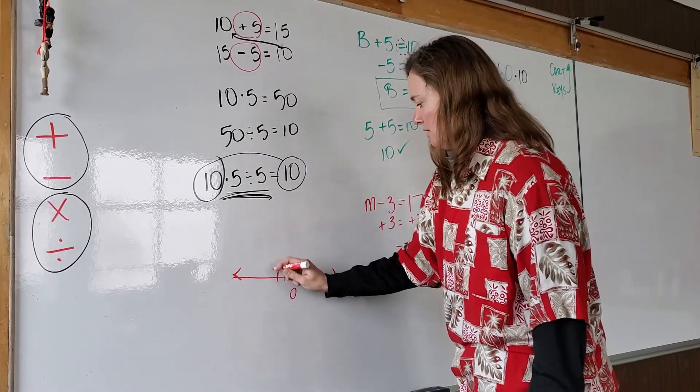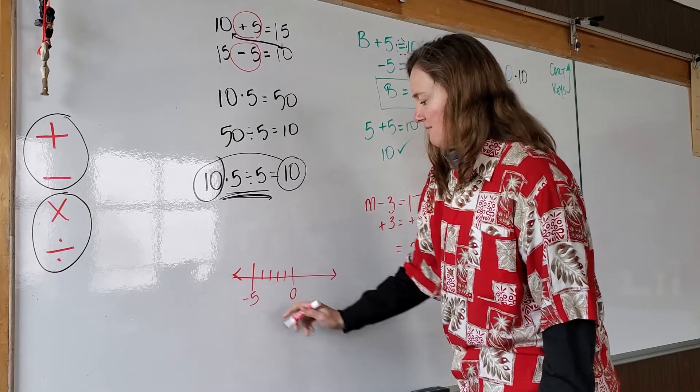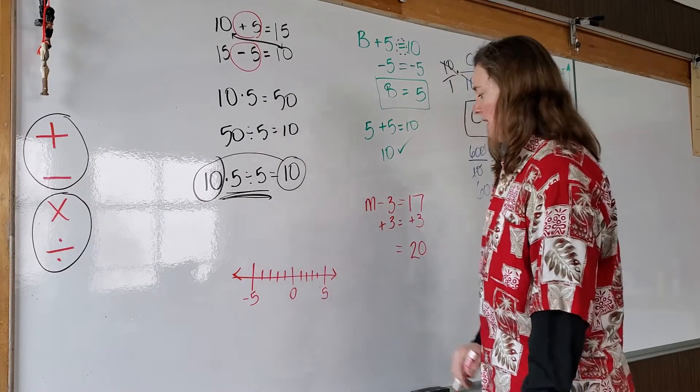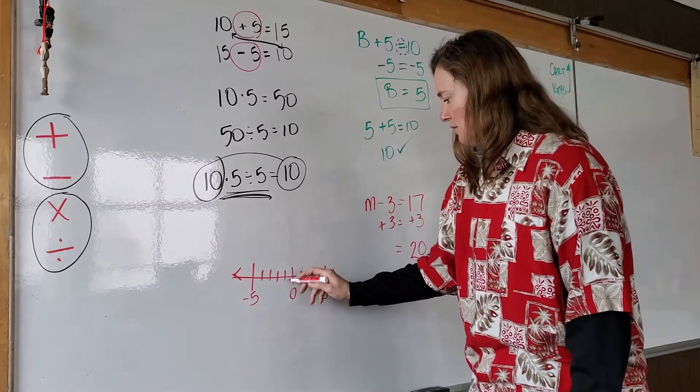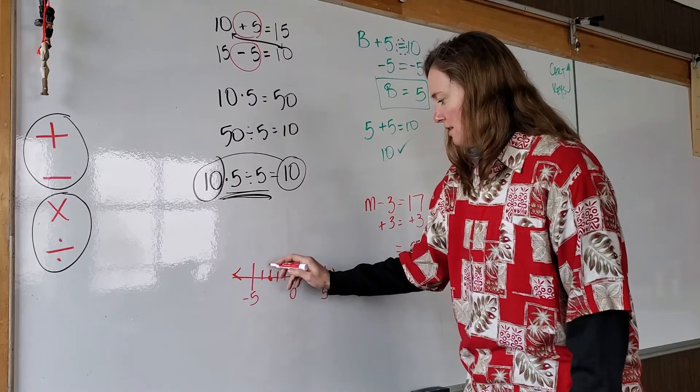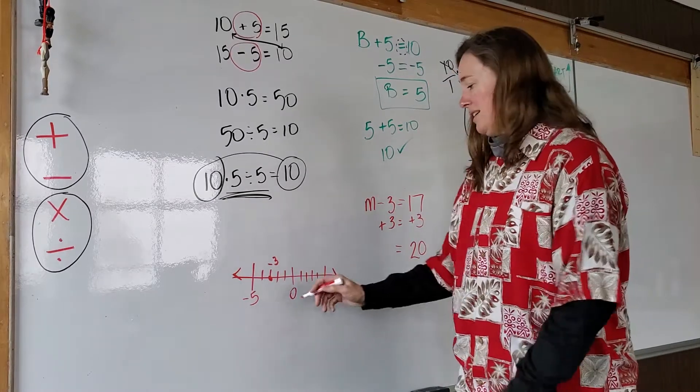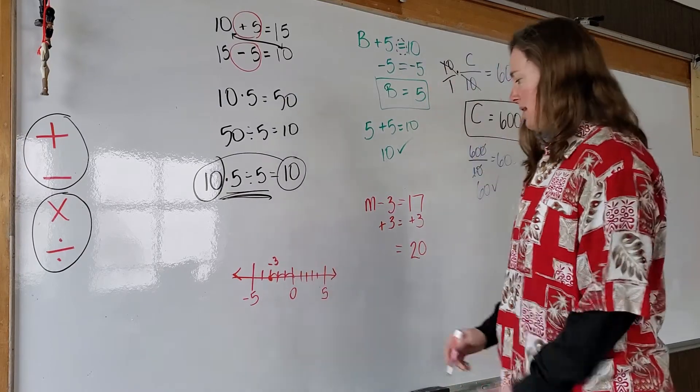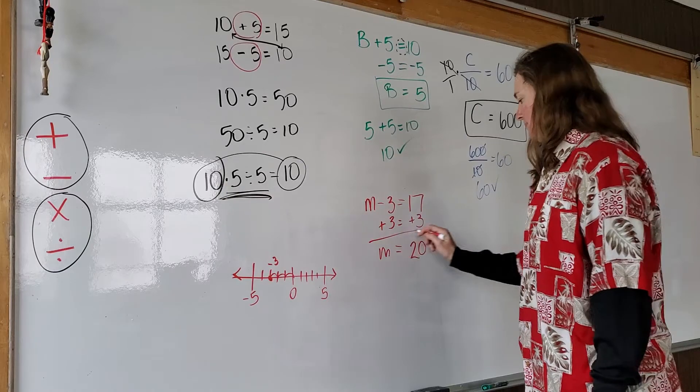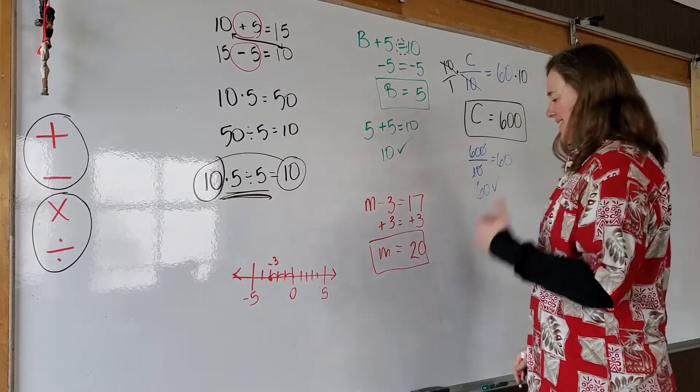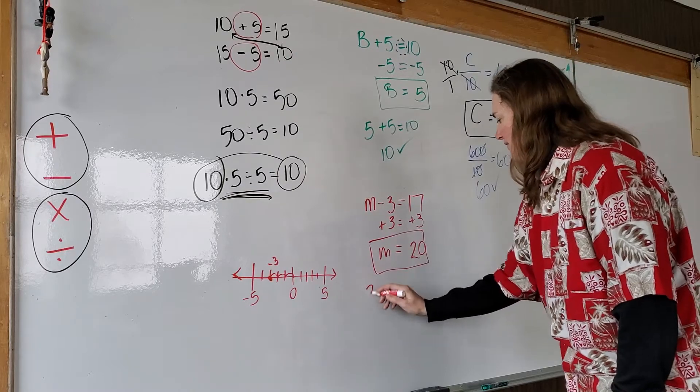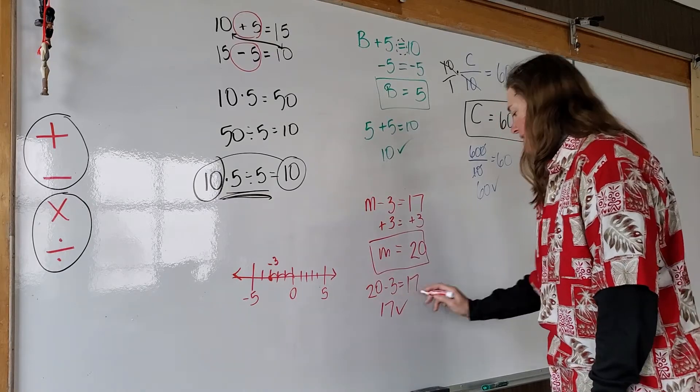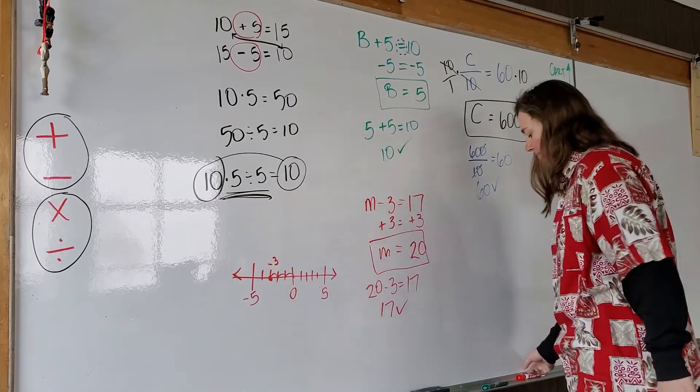If you have a number line, there's negative 5 or 5 to the left of zero. There's positive 5. So if we start out with negative 3, zero, negative 1, negative 2, negative 3. And then we add 3. Adding 3 means go to the right. One, two, three. I am back up at zero. And zero plus M is M. How do we check it? Substitute the value of the variable. What is 20 minus 3? Ah, 17, Misty. Awesome. Okay. Very good.